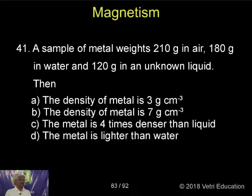Firstly, a sample of metal weighing 210 grams in air, 180 grams in water. And particularly in water it weighs less because of the amount of volume that can be displaced. 120 grams in an unknown liquid, then we calculate the density of the metal.